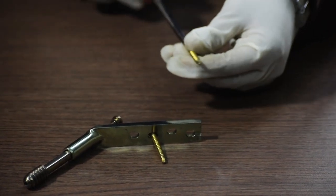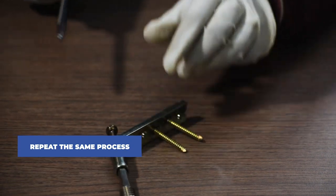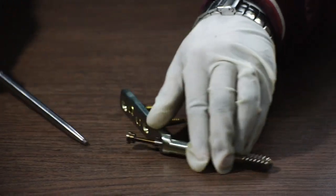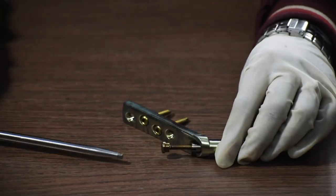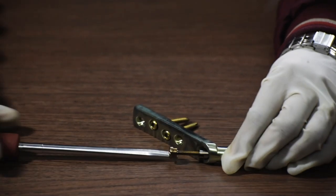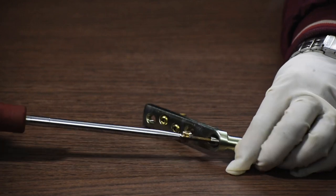We use the same process to fix any other screws in the shaft region of the plate. Thereafter we will tighten the compression screw which was previously placed in the top of the lag screw. This will help in the compression of the fracture.